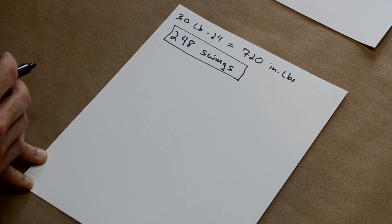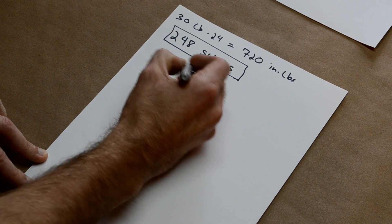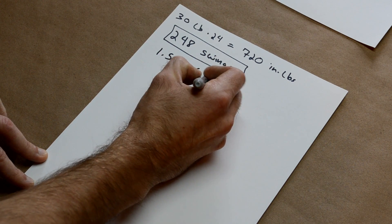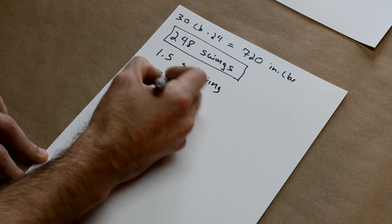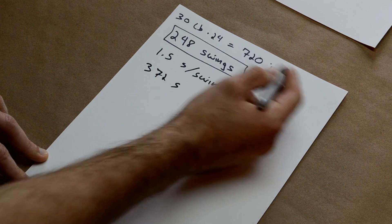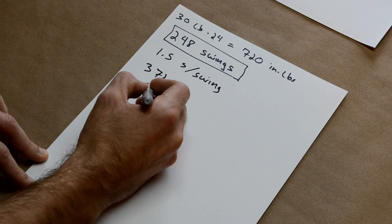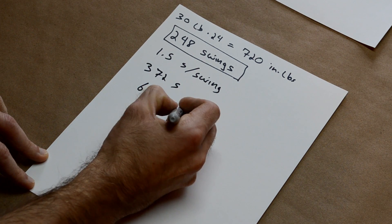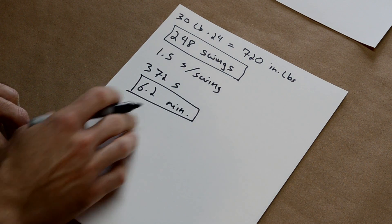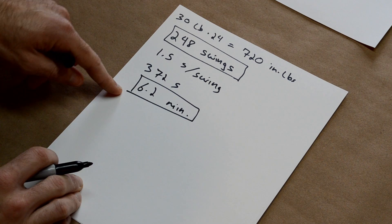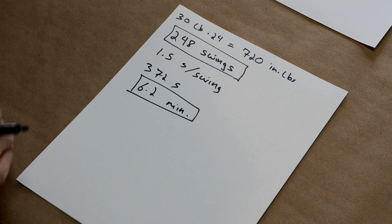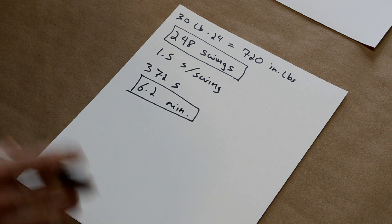So we have 248 swings. It took about 1.5 seconds per swing, which gives us 372 seconds from this much energy, or about 6.2 minutes. So that's about how much we could expect to get from a 30 pound weight 24 inches up. Maybe you could make that heavier. I'm aiming for about 10 minutes right now. I think that seems like a reasonable amount of time.